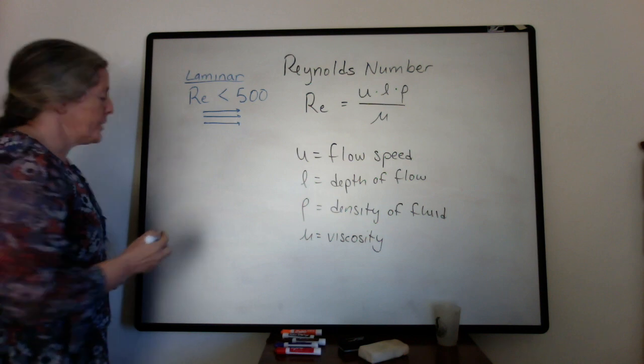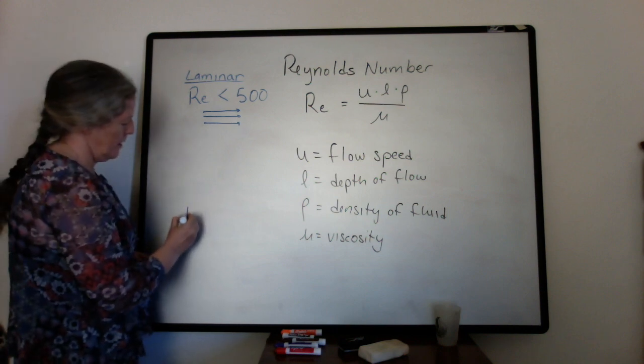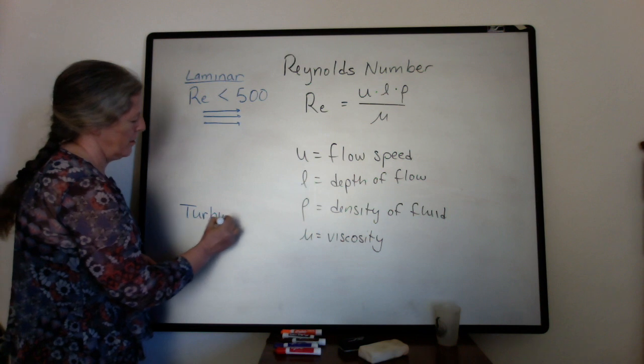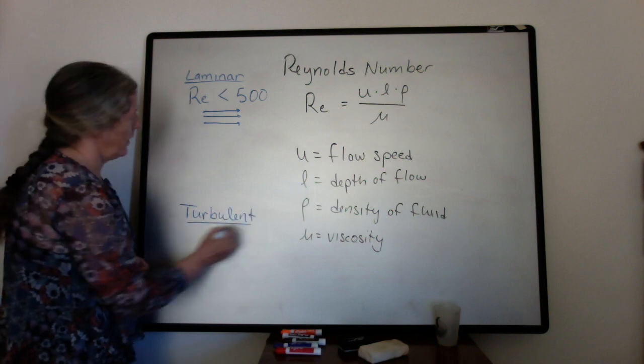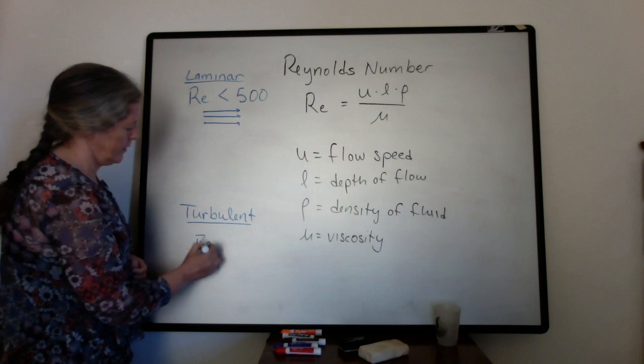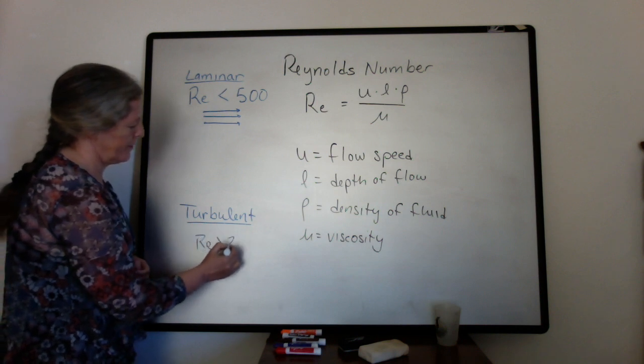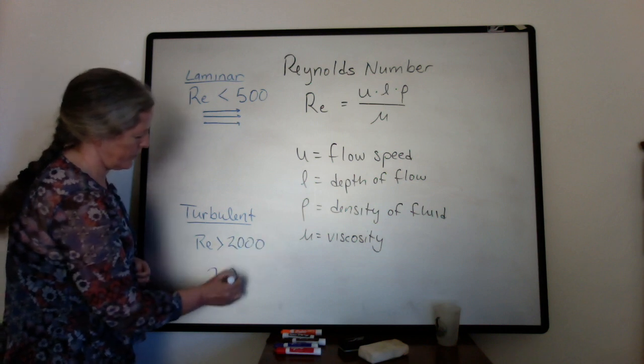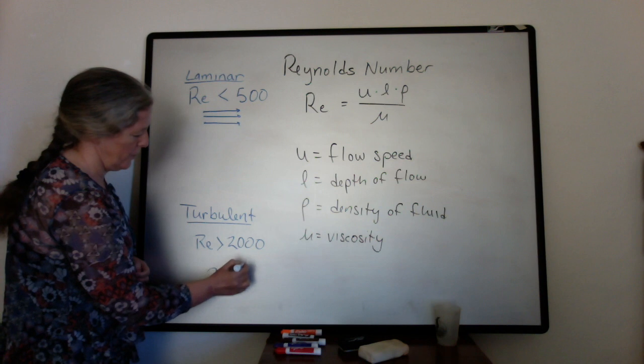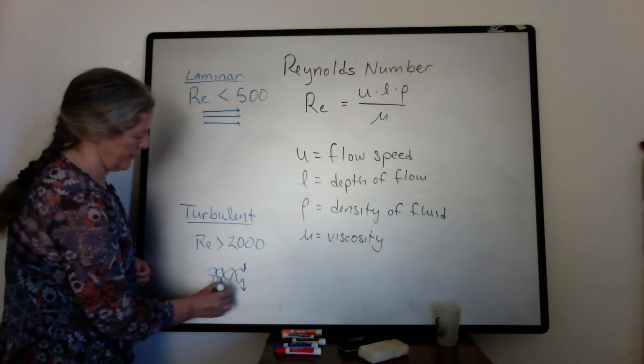A fully turbulent flow is one where the Reynolds number is greater than 2,000, and the particles move in all sorts of directions.